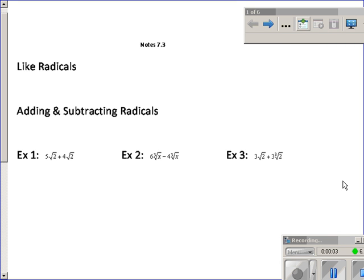Okay, section 7.3. The goals for this lesson is you should be able to add and subtract radical expressions, multiply binomial radical expressions, and rationalize binomial radical denominators using conjugates. The first thing we're going to talk about is adding and subtracting rational expressions, and that begins with like radicals.